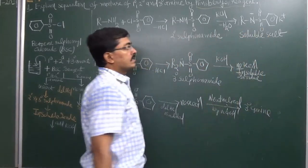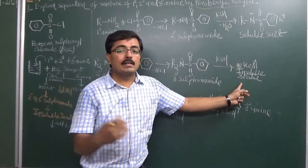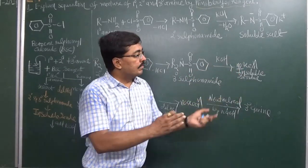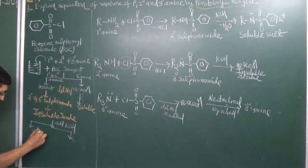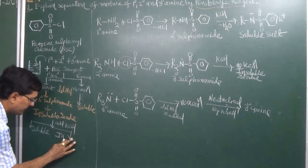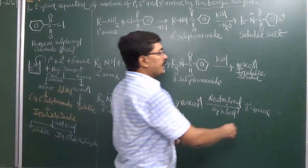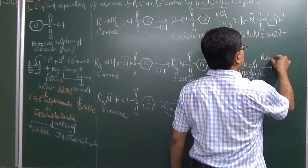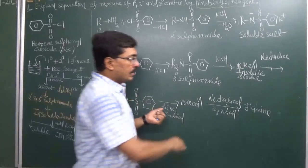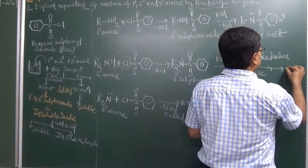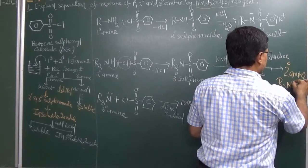The soluble salt is filtered off in the filtrate, and the solid insoluble residue is collected. By simple filtration we get two parts: the soluble salt and the insoluble residue. The insoluble residue is neutralized — since the medium is basic, neutralization gives us the secondary amine back. So we obtain the secondary amine from this step.